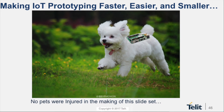So what all of the EVK4 allows you to do is really make the prototyping faster, easier, and of course smaller. So now you can, of course, instrument Foo-Foo here and know where she is and what she's doing, how fast she's moving, if she's rolling over, and things of that nature along the way. And no pets were injured during the making of this slide.